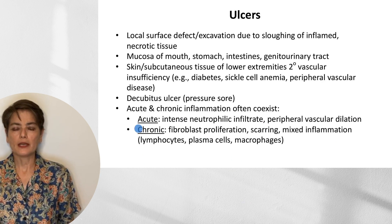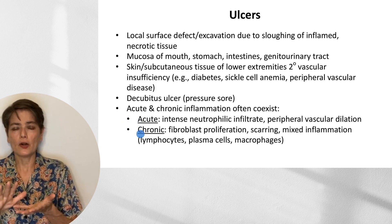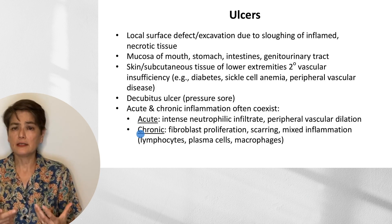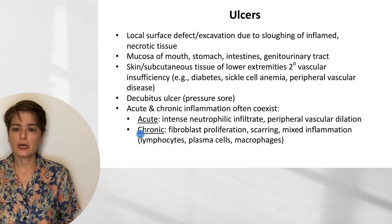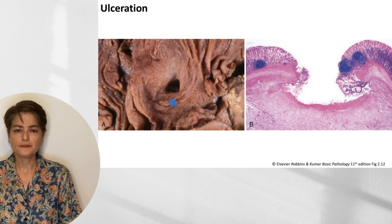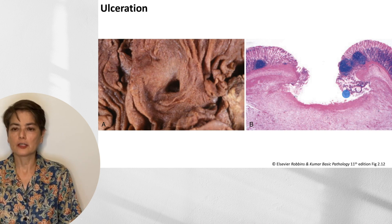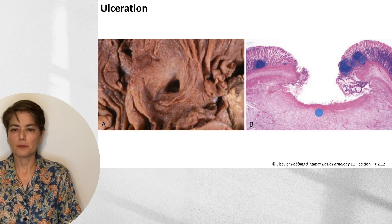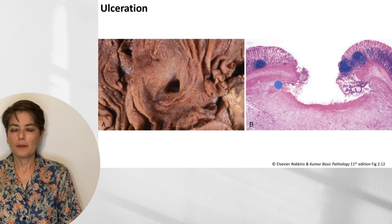One of the reasons we continue to have acute inflammation in ulcers is because ulcers have an exposed area which continues to be seeded with bacteria and other microbes. Here we have an example of a gastric ulcer — a punched-out lesion in the stomach wall. In the histologic image, you can see the loss of the overlying mucosa, and here is the ulcer bed, which is clean as the gastric acid clears it away — this is the classic appearance of an ulcer.